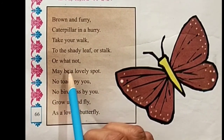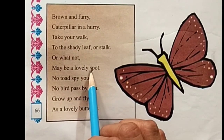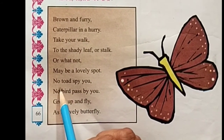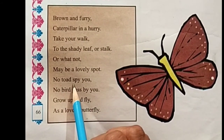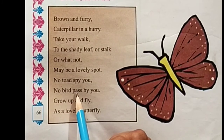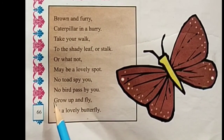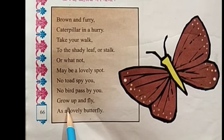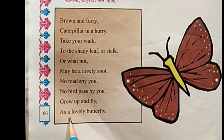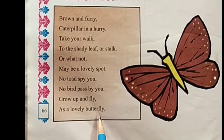Activity 9. May be a lovely spot, no to despise you. No bird pass by you. Grow up and fly as a lovely butterfly.